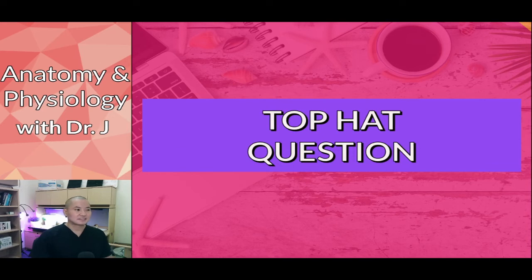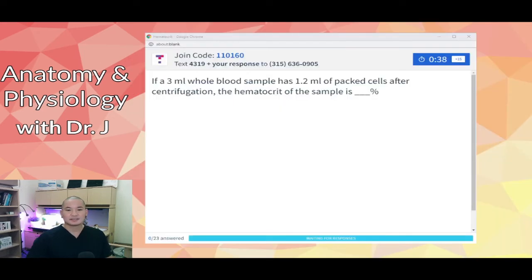Okay, so now let's go to TopHat. So you draw 3 mils of blood from a patient, and then you centrifuge it, and there's 1.2 mils of packed cells after centrifugation. So what's the hematocrit of that sample?